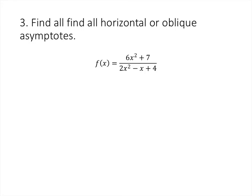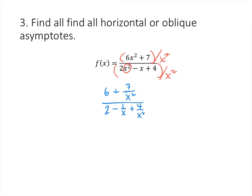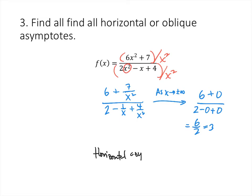Same idea, same process. In this case the highest power of x on the bottom is x squared, so we divide top and bottom by x squared. When we do that, we end up with 6 plus 7 over x squared, divided by 2 minus 1 over x plus 4 over x squared. As x goes to plus or minus infinity, this looks like 6 plus 0 divided by 2 minus 0 plus 0, which is 6 over 2, which is 3. So our horizontal asymptote is y equals 3.